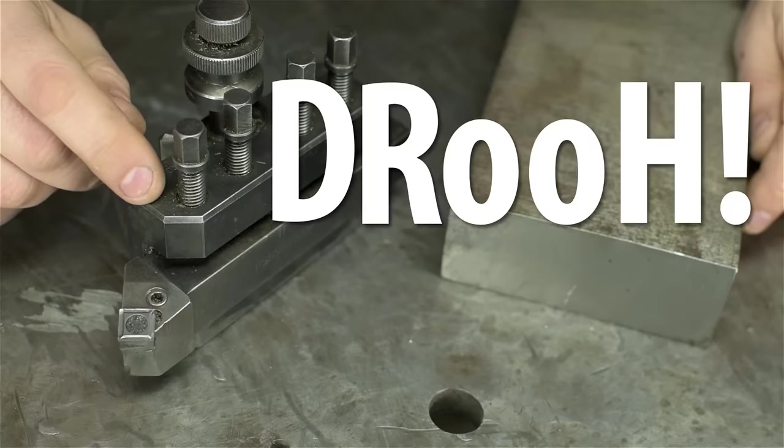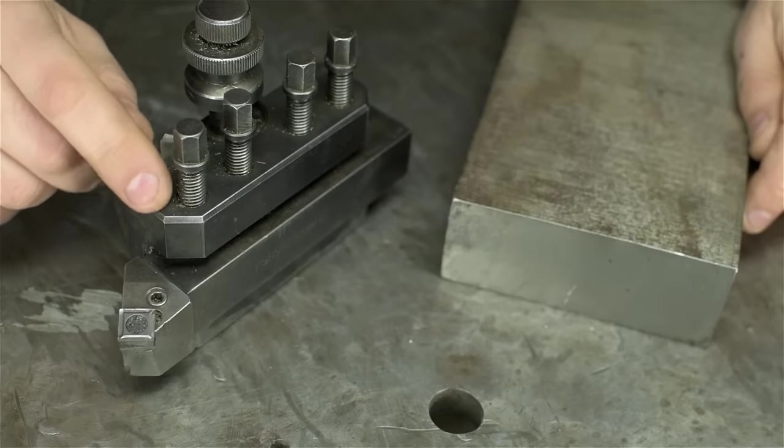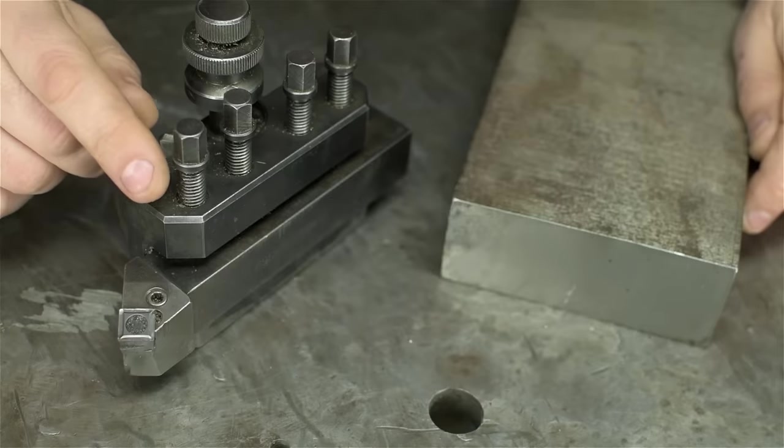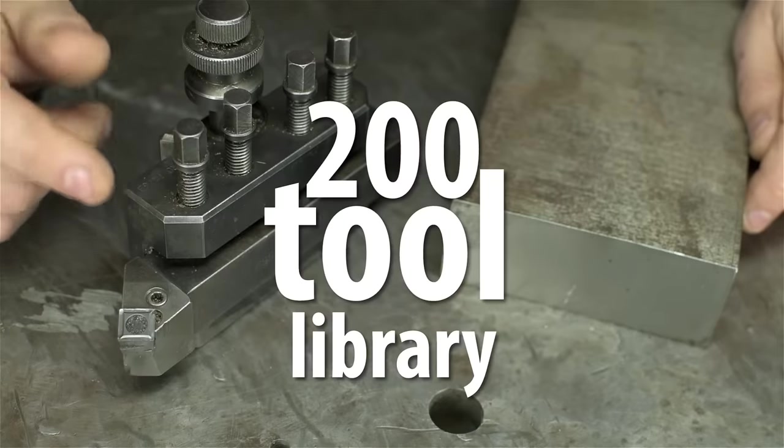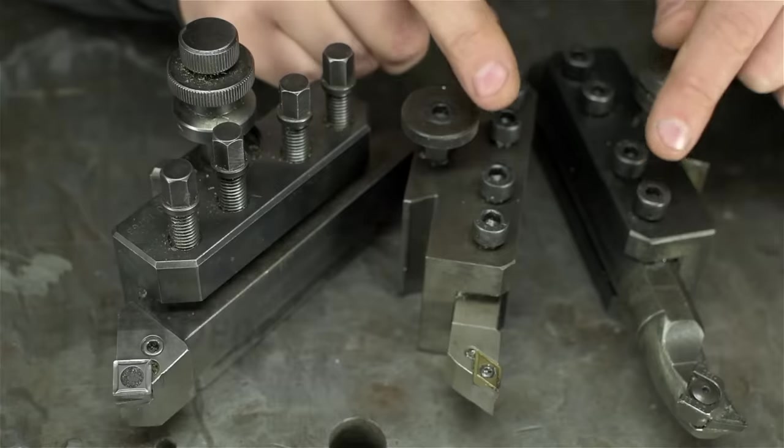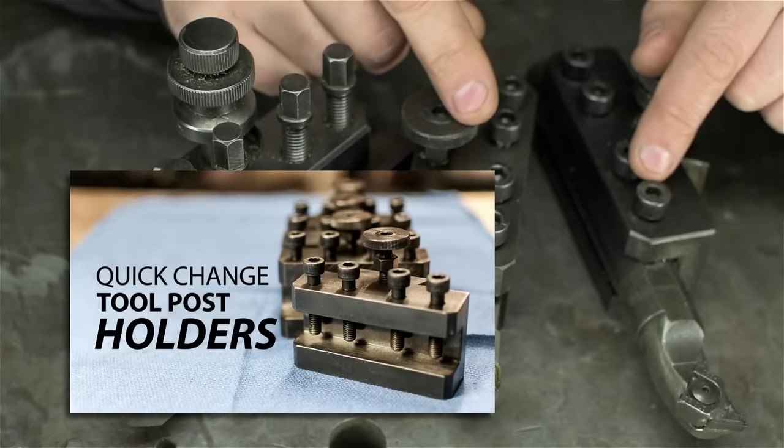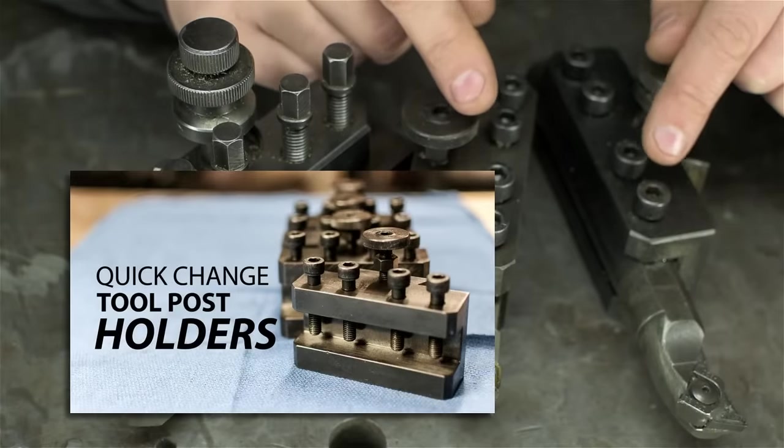I recently added a DRO to my lathe, and today I'd like to make a few more tool holders. The DRO I bought has a 200 tool library. I only have 194 tools. We've already made tool holders here before, the same exact holders we'll be making today, except I did those on the shaper, which I don't have anymore.